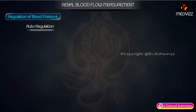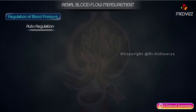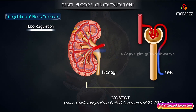Autoregulation is defined as the ability of tissues to regulate their own blood flow in spite of changes in blood pressure within a certain range. The renal blood flow and thus the GFR remain constant over a wide range of renal arterial pressures of 90 to 220 mmHg.